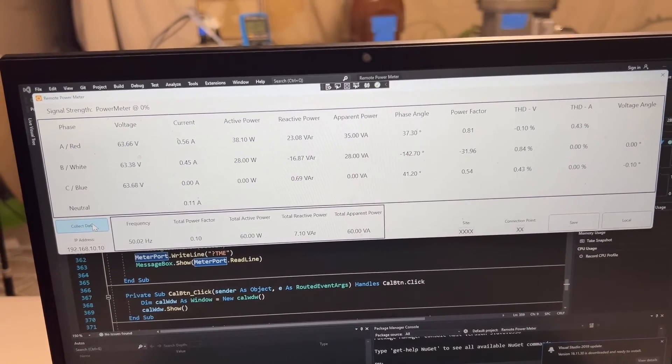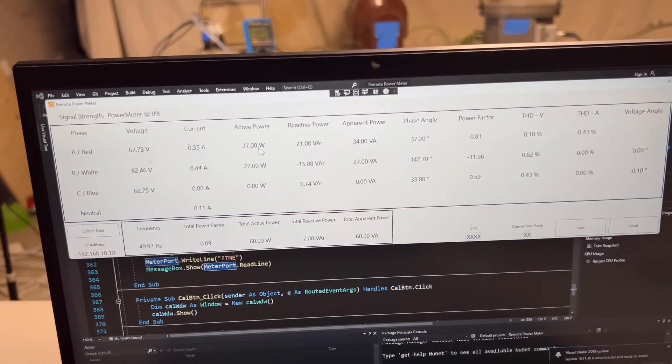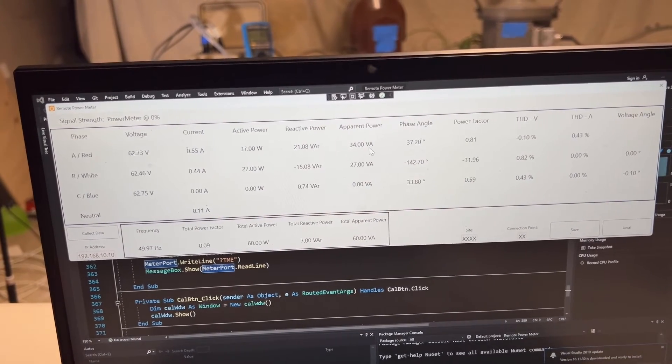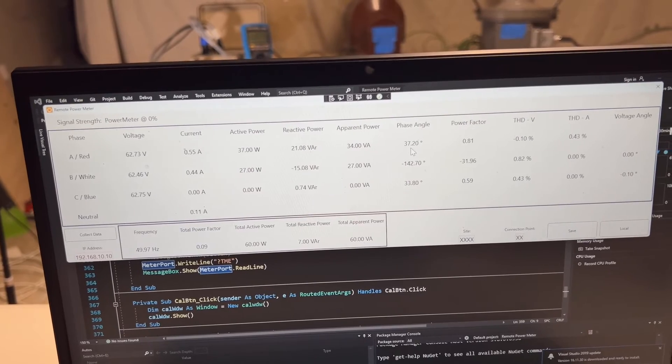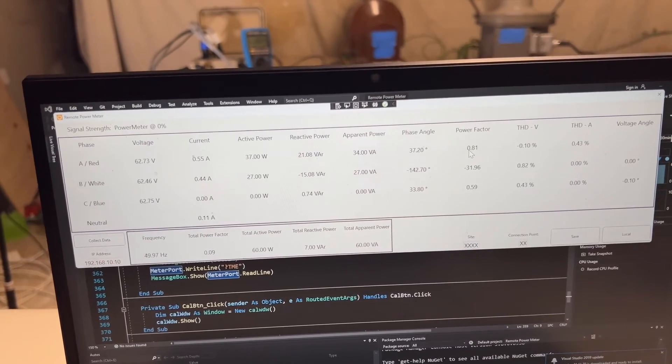So if I collect that, that update, yep it's updating, zero, active power, reactive power, 34, I'm slightly lower, 37.2 so that's close, power factor 0.8.